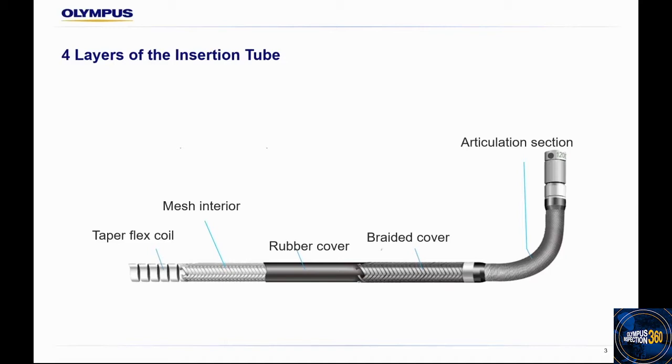The third layer is the mesh interior for torsion resistance. The final layer is the taper flex coil for crush resistance while maintaining the flexibility of the insertion tube, allowing it to easily maneuver and go through twists and turns.